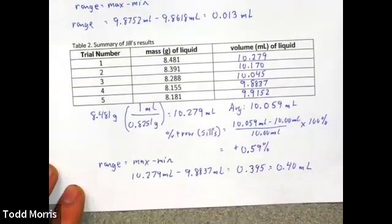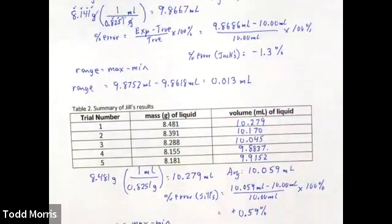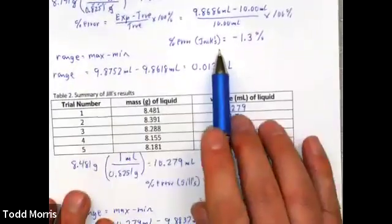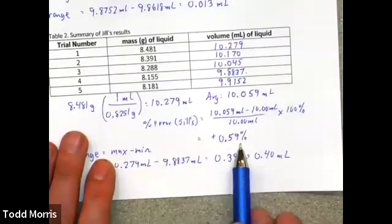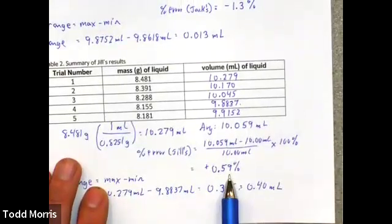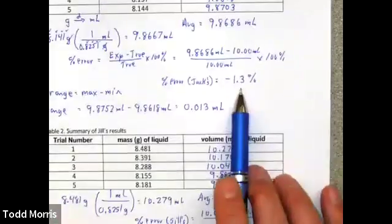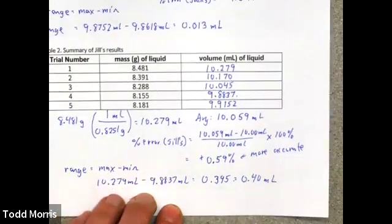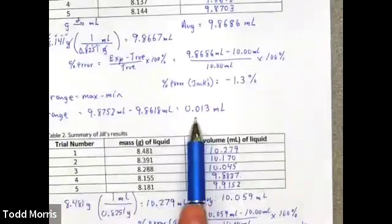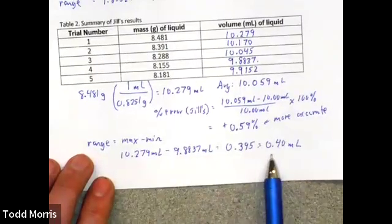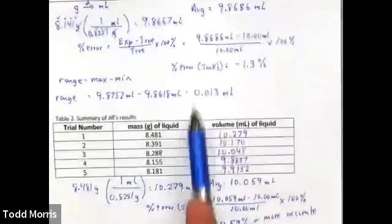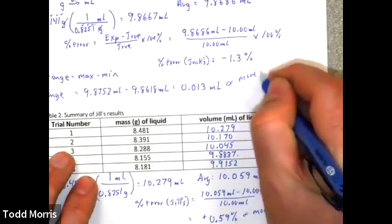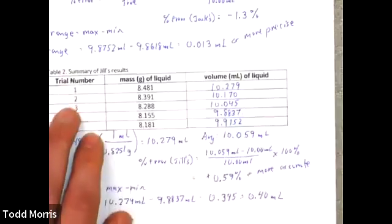So, now I can finally answer the question of who is more accurate, who is more precise. With accuracy, we want percent error closer to zero. And Jack's accuracy is negative 1.3%. Jill's accuracy was positive 0.59%. So, because 0.59% is closer to zero than negative 1.3, we could say then that Jill, in this case, is more accurate. Her values are closer to the true volume. For precision, though, we're going to look at range. And once again, the smaller the value, the more precise. Jill's range is 0.4 milliliters. Jack's range is 0.013 milliliters. Because Jack's value is smaller, we could say then that Jack was more precise. Notice that just because data is accurate, it does not necessarily mean it's precise, and vice versa.